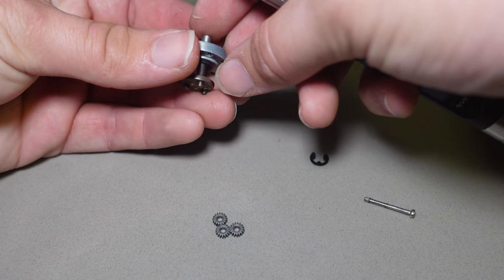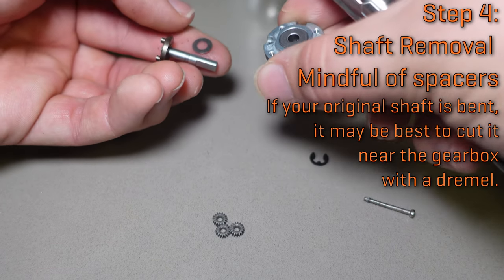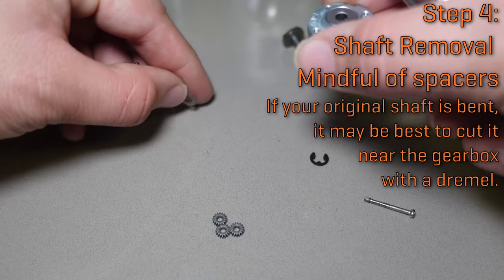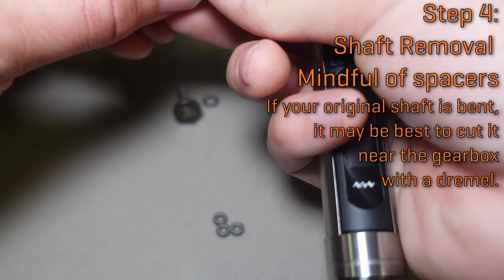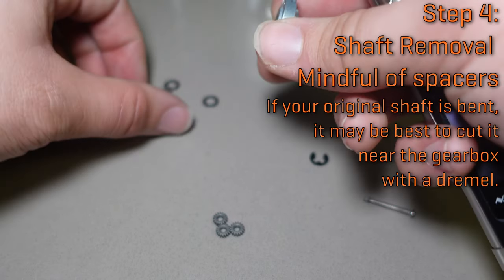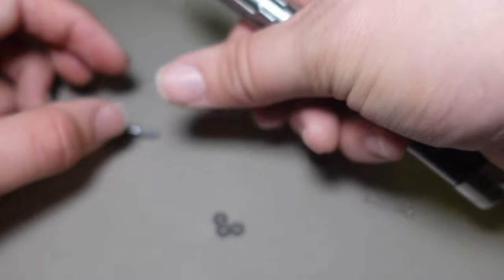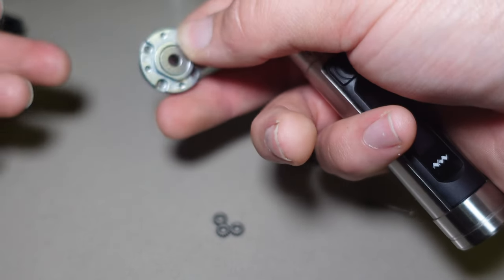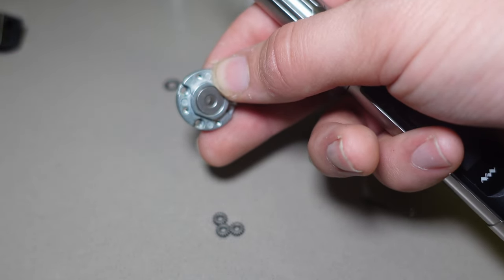And now the shaft should be able to just push straight through and come out. And there's this little spacer on top that we also want to save. There's a spacer on the top, spacer on the bottom. Those should be identical, it doesn't really matter which is which. And then we've got the actual front plate of the motor with the bushing pressed into it. So this is the old shaft, I'm going to set that aside.